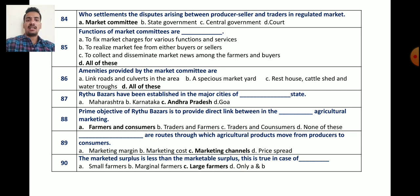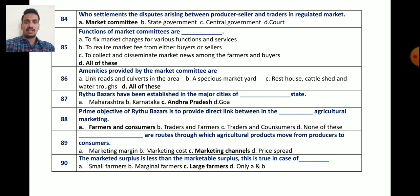Next question: blank are the routes through which agricultural produce moves from producer to consumer. The correct answer is marketing channels — marketing channels are the routes through which agricultural produce moves from producer to consumer. To recap, the marketed surplus is less than marketable surplus — this is true in the case of large farmers. Thank you.